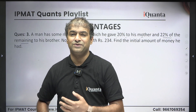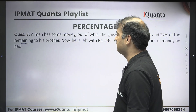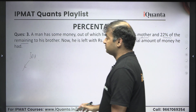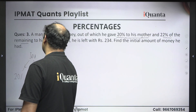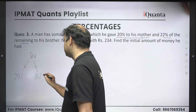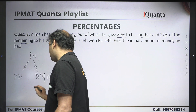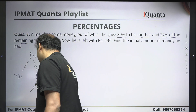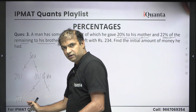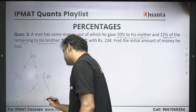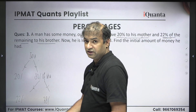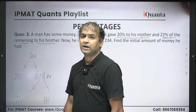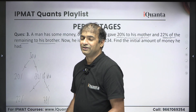In this kind of question, students usually get confused. Initially, let's say he had some initial money. He gave 20% to his mother, so he must be left with 80% of the initial money. Now out of this remaining 80%, he gave 22% to his brother, so he is left with 78% of the remaining. Usually students think he gave 20% and 22%, so 42% total and he is left with 58% — but both assumptions are wrong.